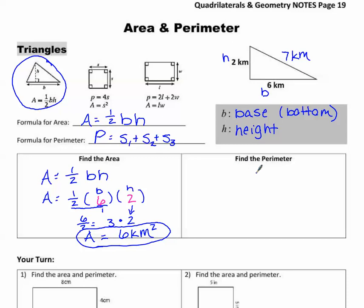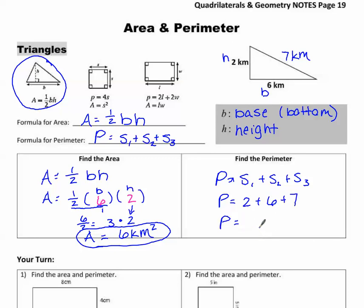Now find the perimeter: P equals side 1 plus side 2 plus side 3. Add them all together: 2 plus 6 plus 7 equals 15 kilometers. And remember, perimeter is plain — so P equals 15 kilometers.